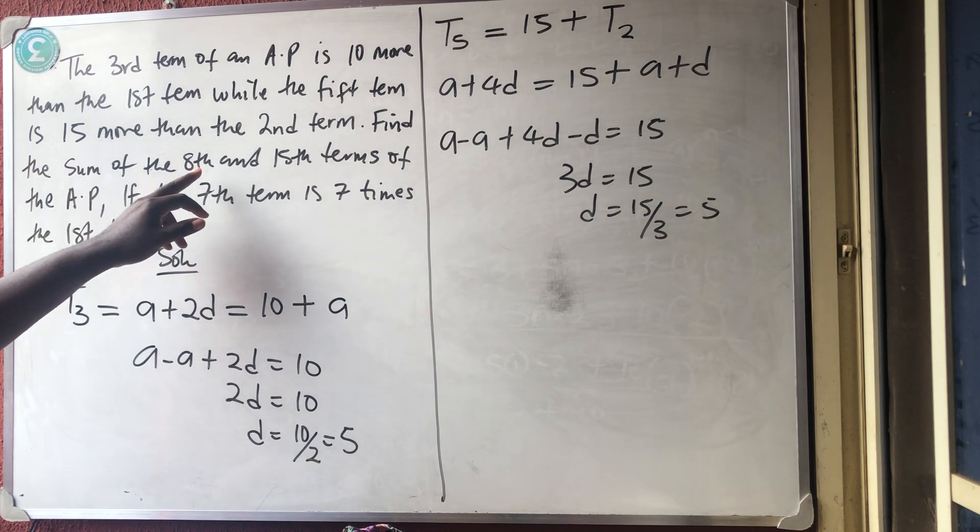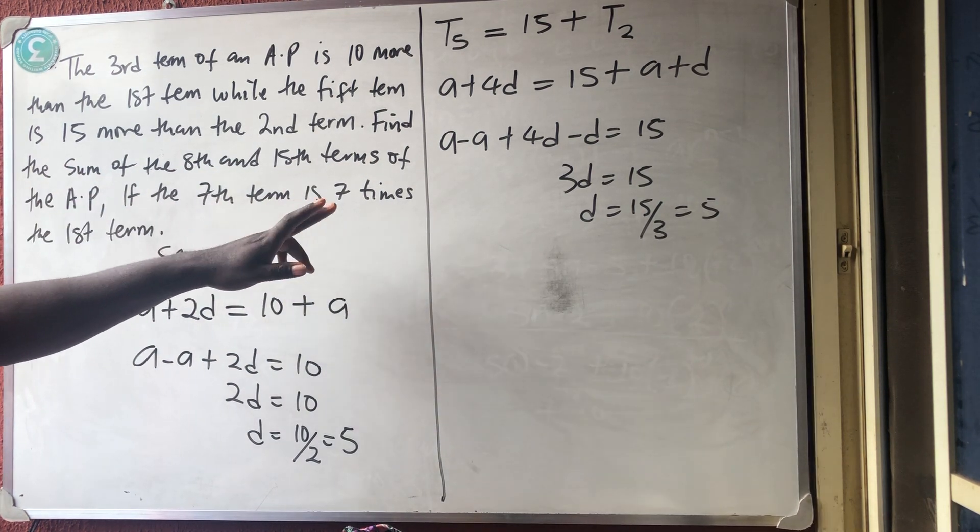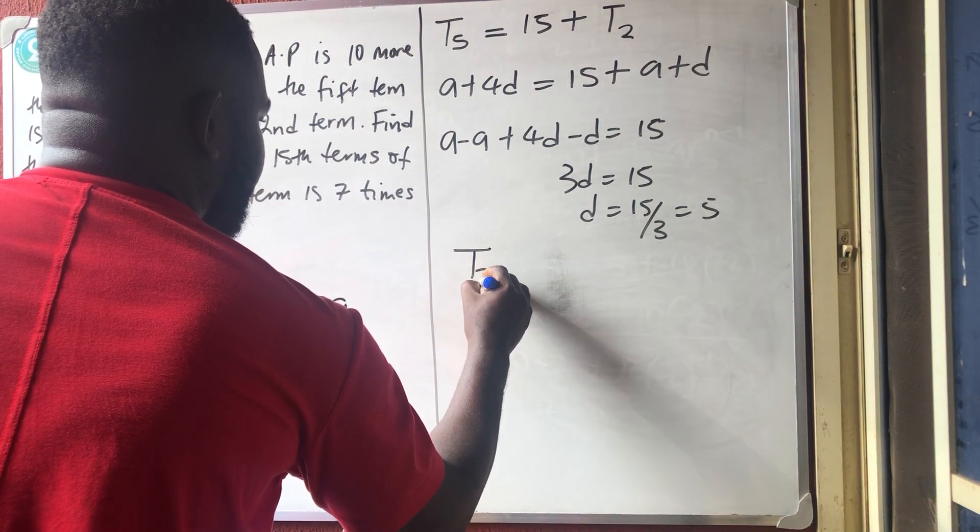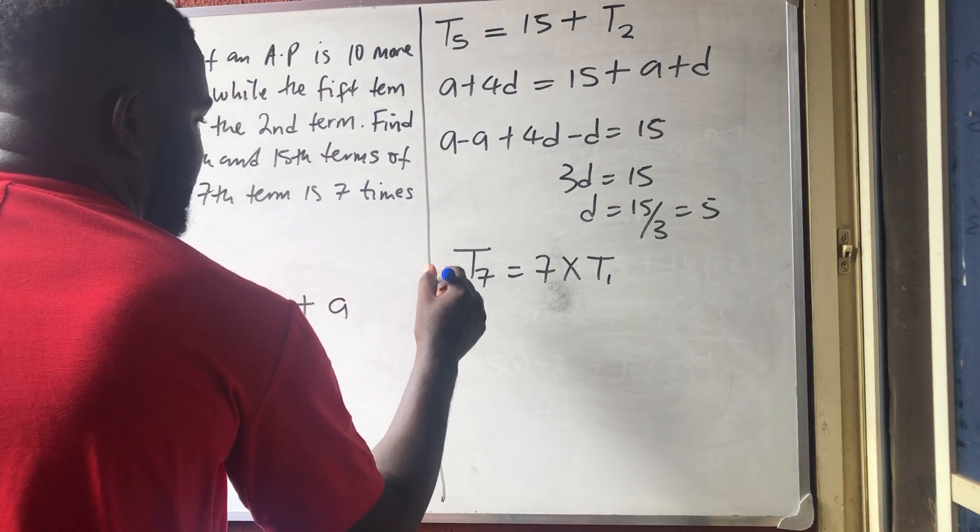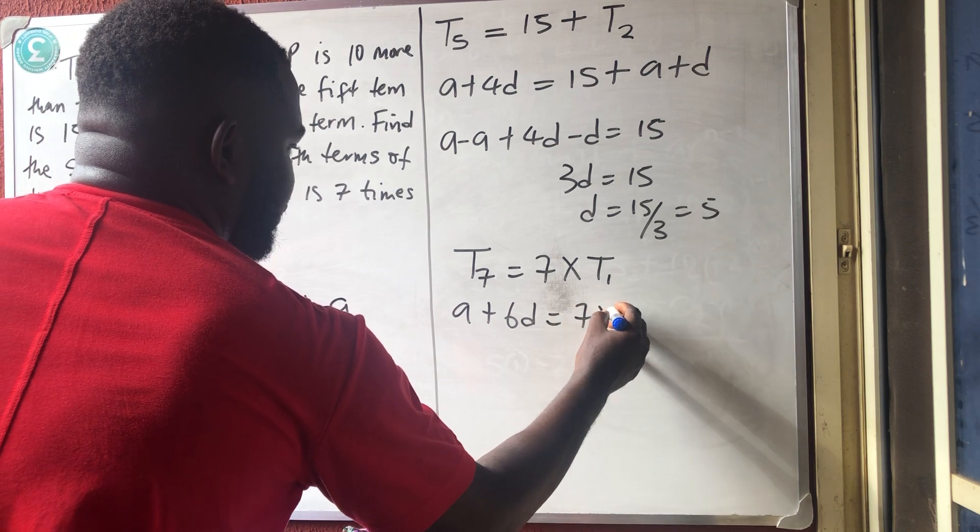Then I say, find the sum of the eighth term and the 15th term of the AP. If the seventh term is seven times the first term, okay? They said that the seventh term is equal to seven times the first term. And formula for seventh term is A plus 6D is equal to seven times A.